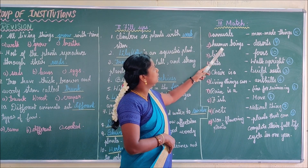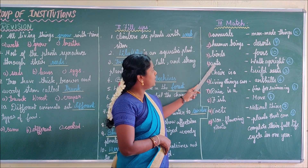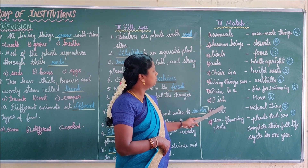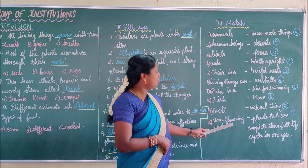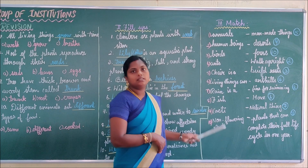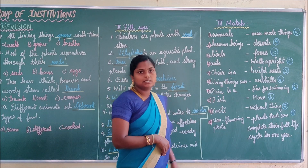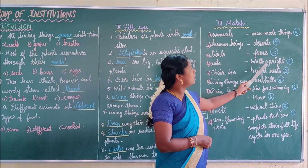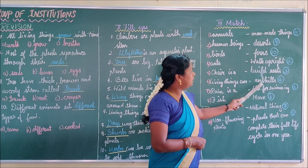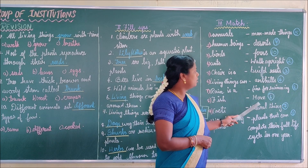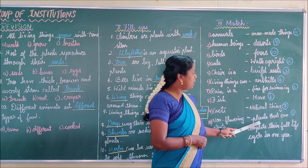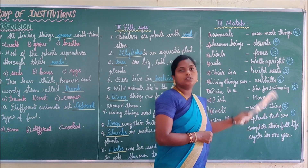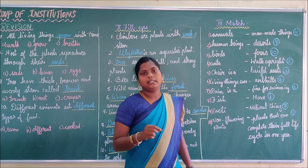The questions for matching are: Annuals, Human beings, Birds, Ants, Chair is a living thing, Cat, Rain is a fish, Cactus, Non-flowering plants. Now let's look at the options and find the correct answers.